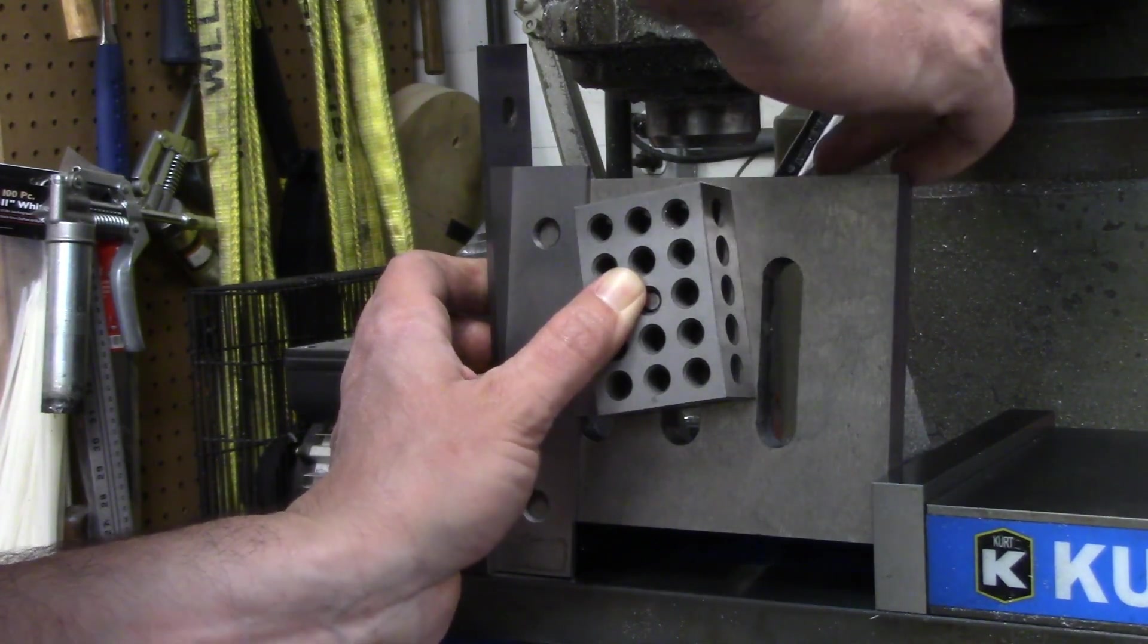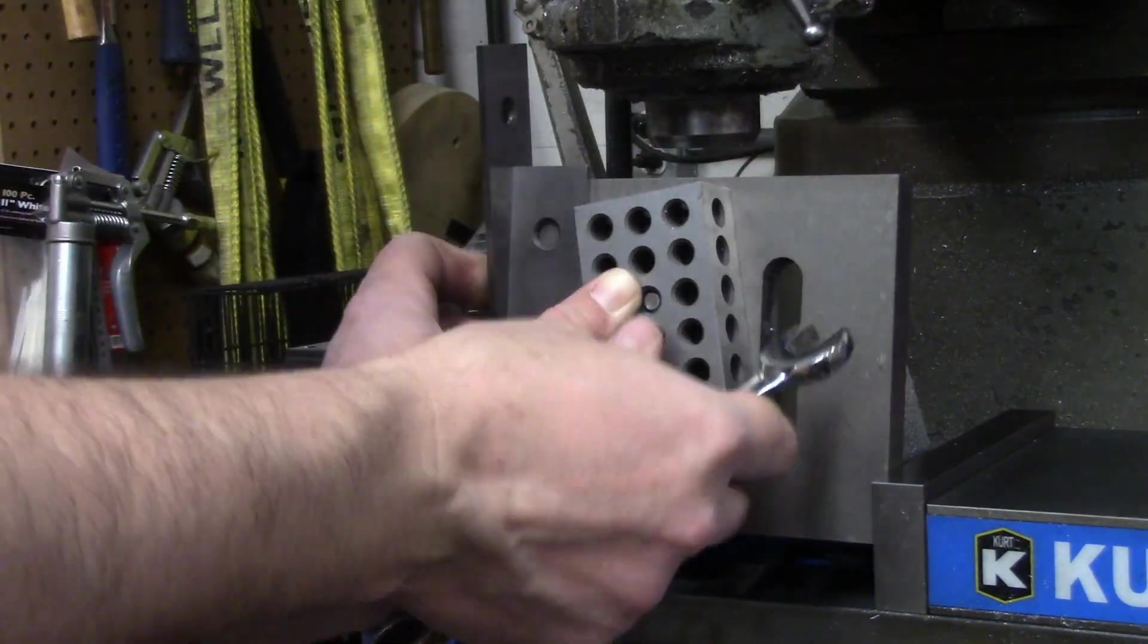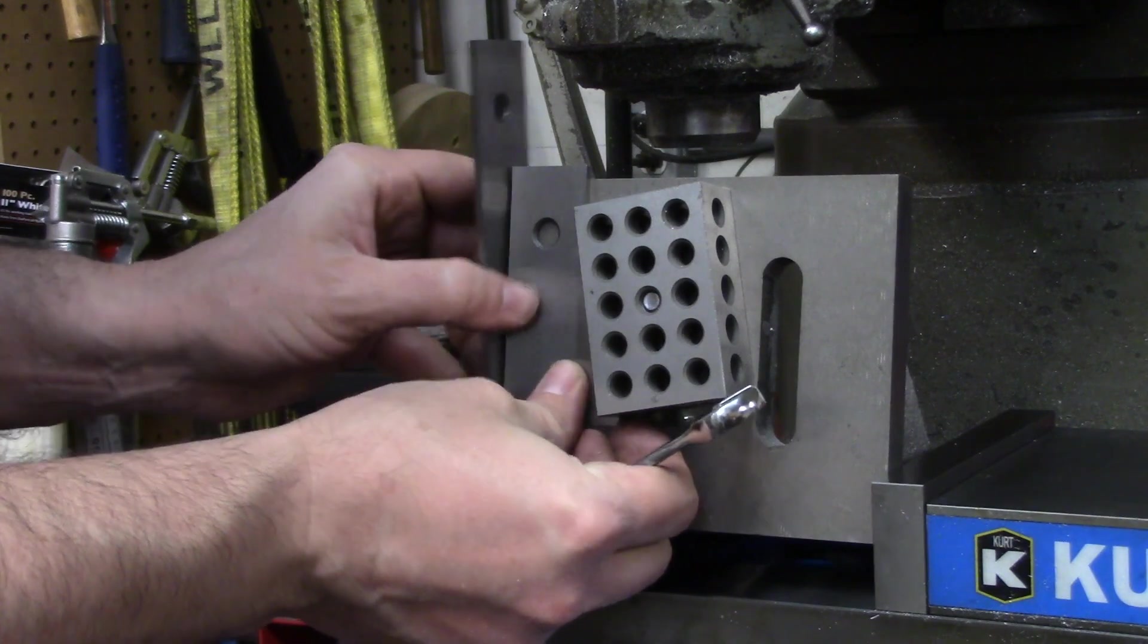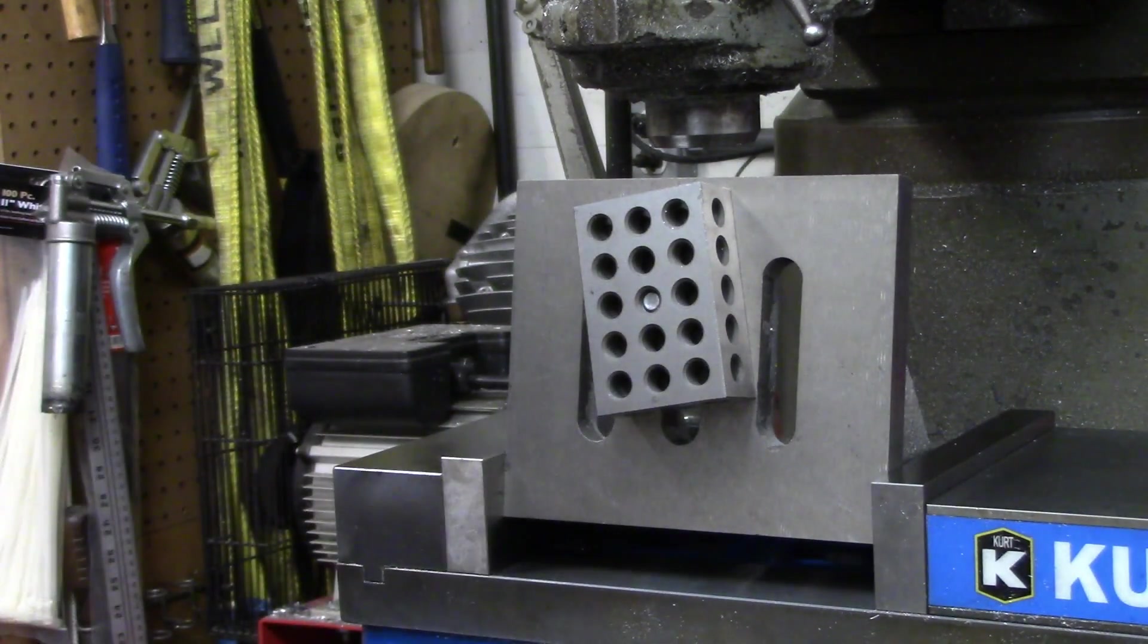My ratcheting wrench didn't help me much because I put it on the bolt the wrong way every single time. Why does it always work out that way? You've got a 50-50 shot at it, but a 100% chance of being wrong.